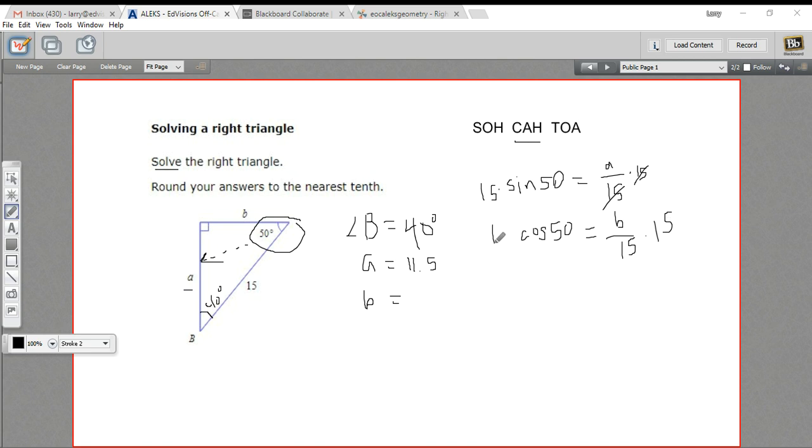We just multiply both sides by 15 to solve for B. And now on my calculator, I'm punching in 50 and hitting cosine and then multiplying by 15, and I get rounding to the nearest tenth, 9.6. So that is how to use the trigonometric functions to solve a right triangle.